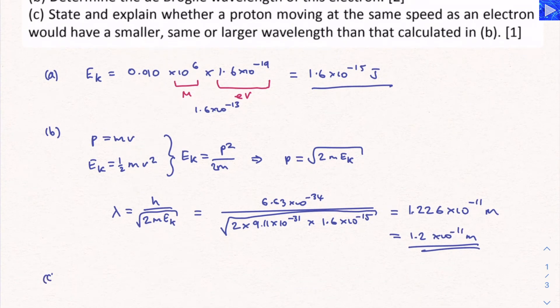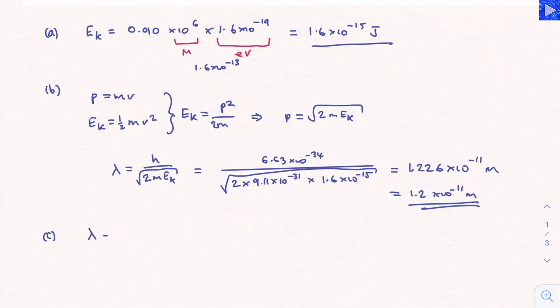Let's do part C. Part C, state and explain whether a proton moving at the same speed as an electron would have a smaller, the same, or larger wavelength. Okay, let's have a look at the equation. Lambda equals h over mv.